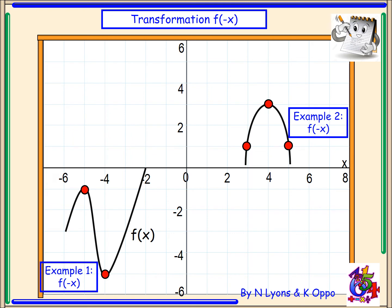So if we look firstly at example 1 we've been given a graph f(x) and we have to flip it over our y-axis. Flipping over our y-axis our minimum turning point becomes (4, -5) and our maximum turning point becomes (5, -1).